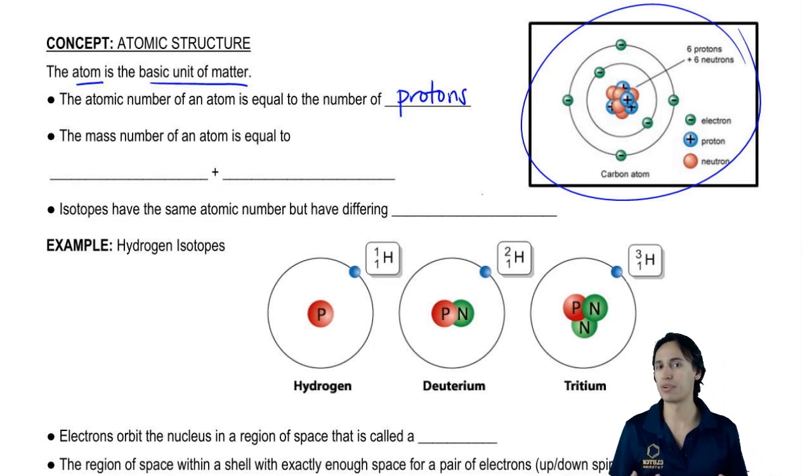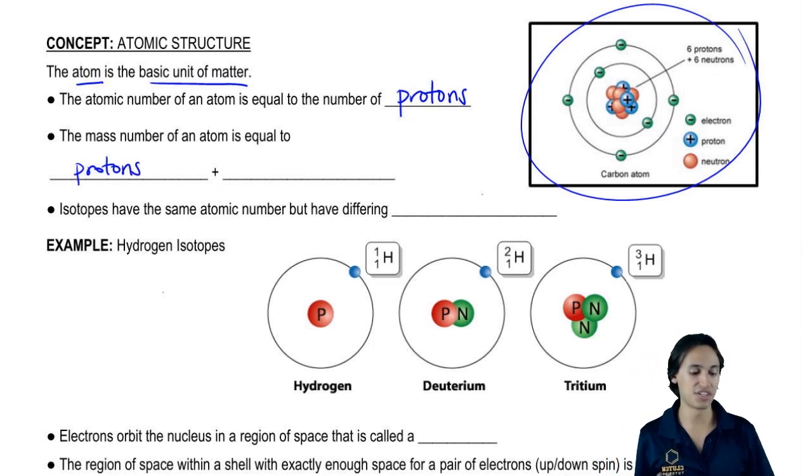Whereas the mass number is a little bit different. The atomic mass has to do with the number of protons plus the number of what? You guys remember this? Plus the number of neutrons.